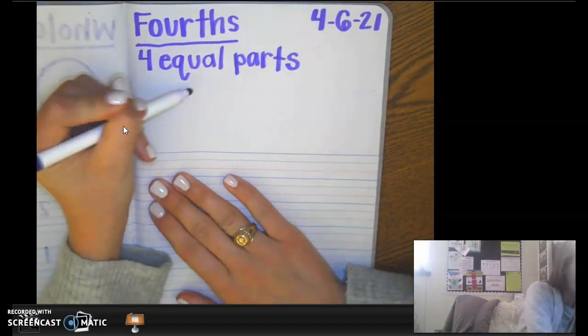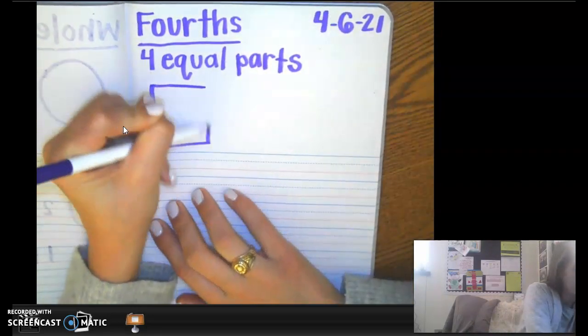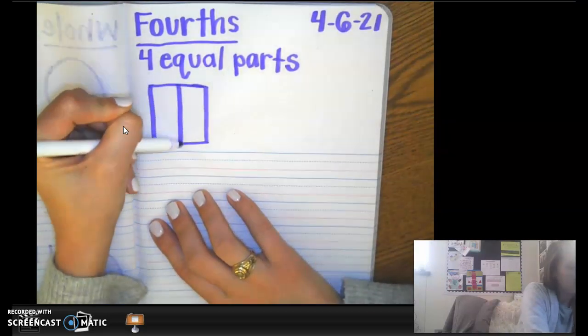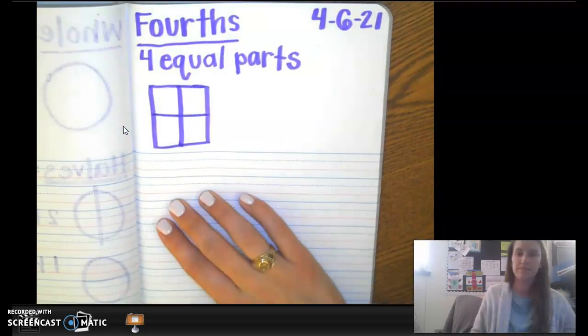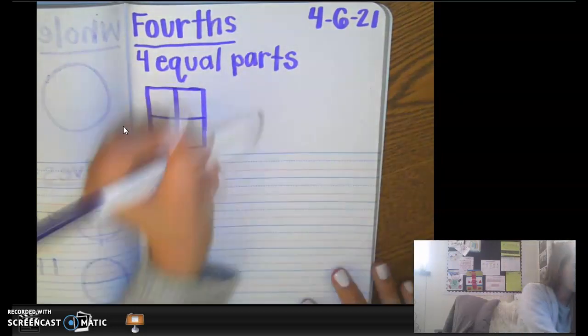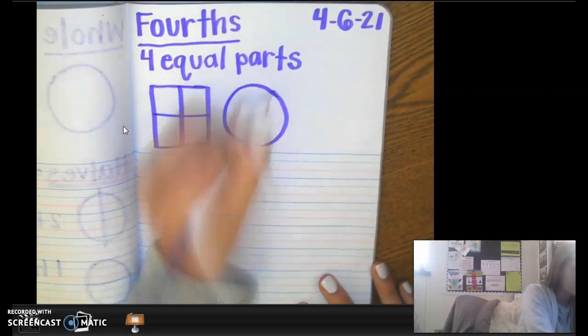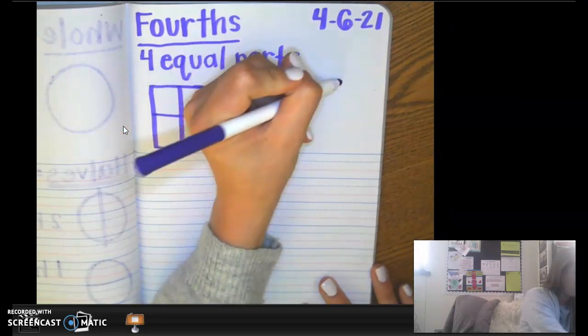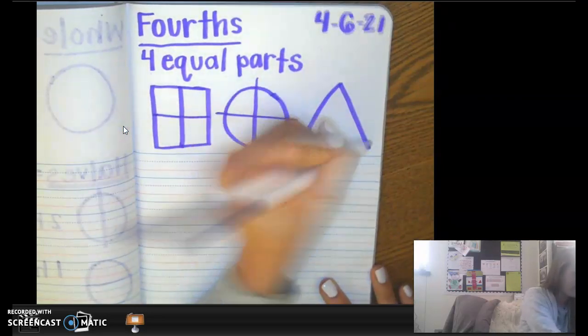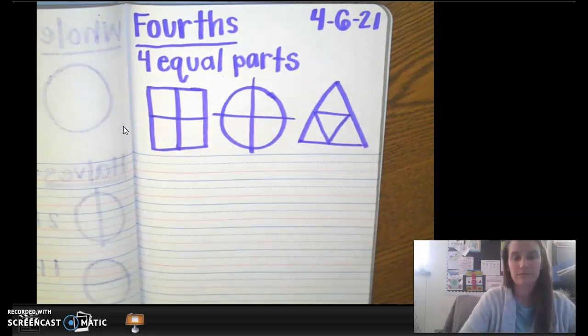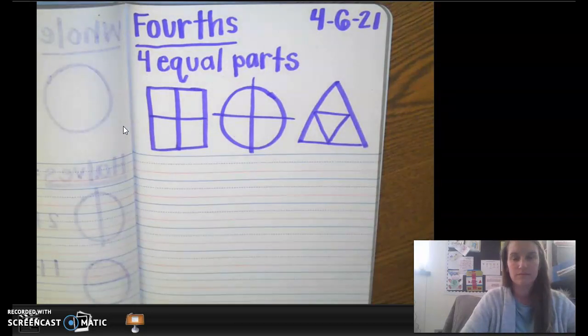Now what I want us to do is I want us to draw one whole square. And let's partition it into four equal parts. This is an example of fourths: one, two, three, four equal parts. We could draw a circle, just like we did earlier to help us remember, and we could make that into fourths. We could even do a triangle. Triangles can be kind of tricky.